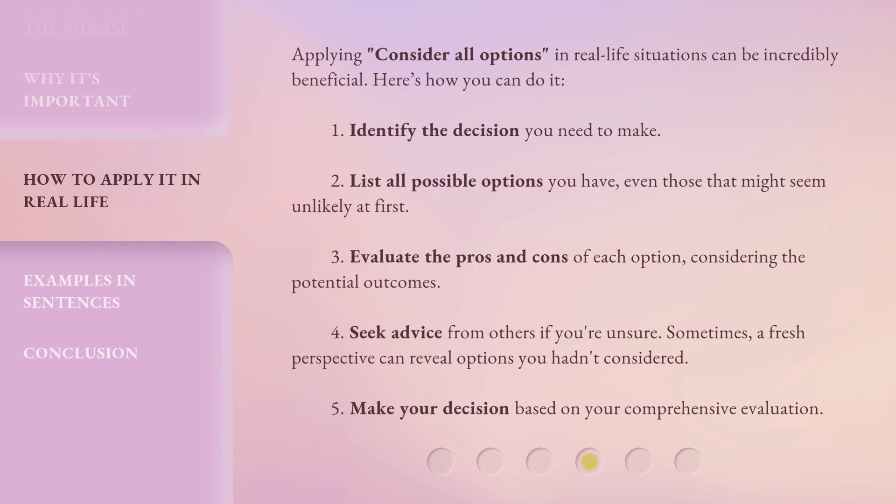Applying consider all options in real life situations can be incredibly beneficial. Here's how you can do it: 1. Identify the decision you need to make. 2. List all possible options you have, even those that might seem unlikely at first. 3. Evaluate the pros and cons of each option, considering the potential outcomes. 4. Seek advice from others if you're unsure — sometimes a fresh perspective can reveal options you hadn't considered. 5. Make your decision based on your comprehensive evaluation.